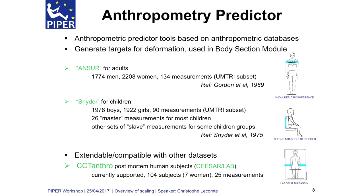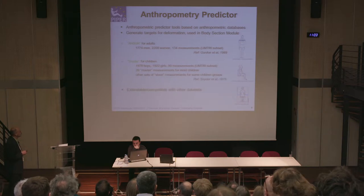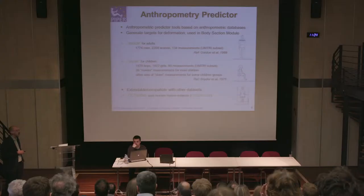These are the main anthropometric databases used in the anthropometric module. This is extendable and compatible with other datasets. For example, in the project we have obtained measurements for CT scans provided by CESAR, and an increasing size database has already been integrated inside the tools. So if you want to use other databases, that would be possible.